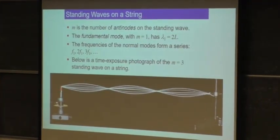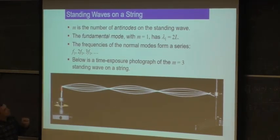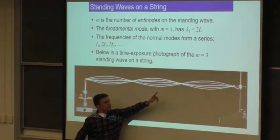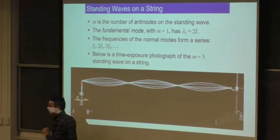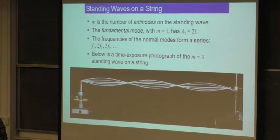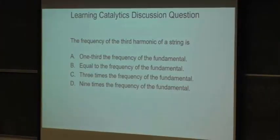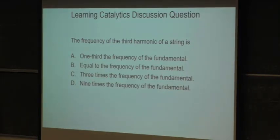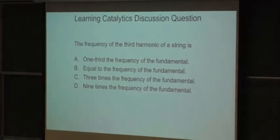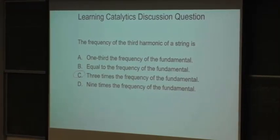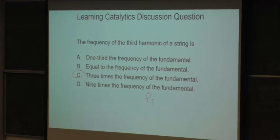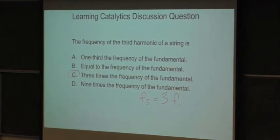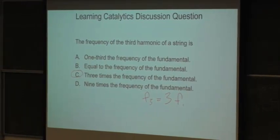Here's a photograph, a time exposure photograph of the M equals three on a wave on a string. You see these nodes where nothing's moving. And then at one, two, three, four, five different times you can see the flash and see it going up and down. And one more learning catalytics for you. I'll just give you 30 seconds on this one. Most people got that. So three times the fundamental, F3 is equal to three times F1 for M equals three. So that's it about standing waves on the string. That's all you need to know.